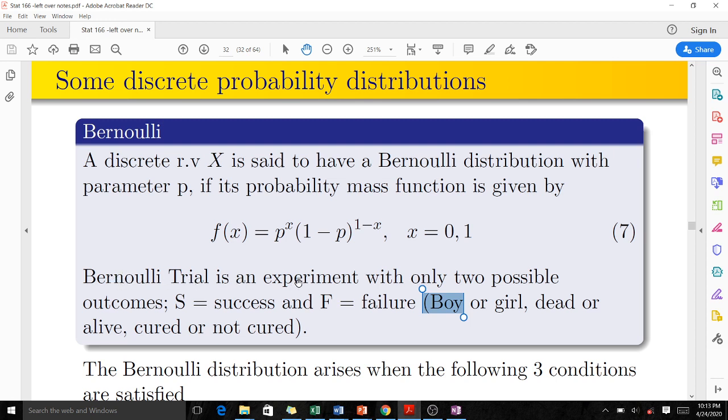The Bernoulli trial is an experiment with only two possible outcomes: a success and a failure. For instance, when a woman goes into delivery, it's either she gives birth to a boy or a girl. In an accident, it's either some will die or some will survive. When you have a sickness, it's either you will be cured or not cured. All these things have just two outcomes, so they follow the Bernoulli trial.